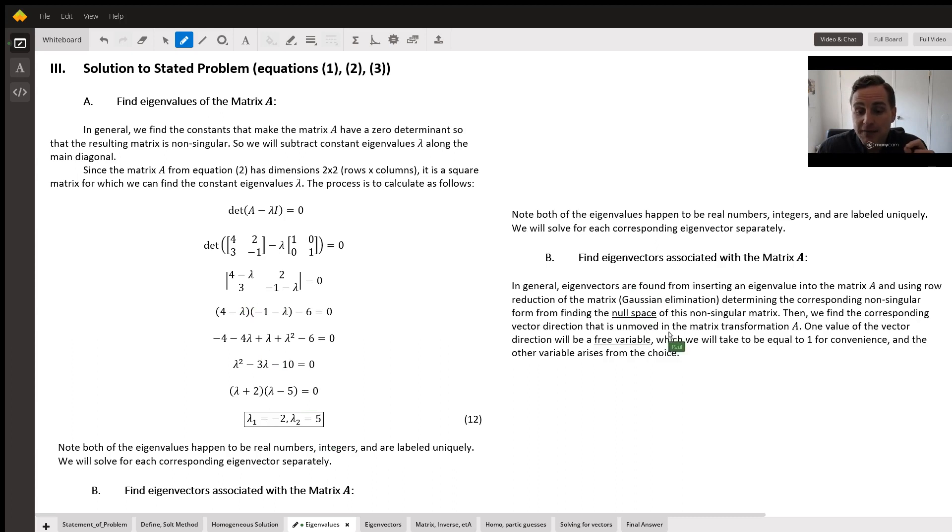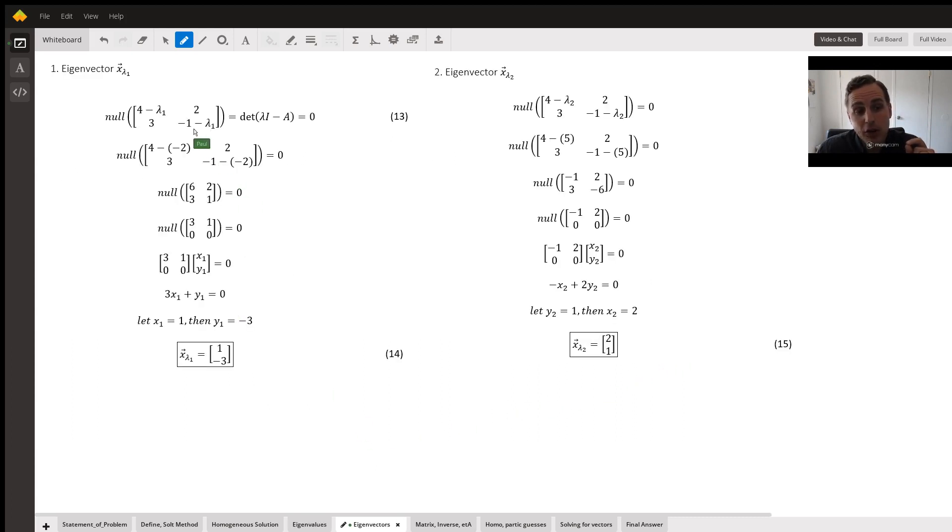To get the eigenvectors associated with those eigenvalues, you insert them back into that determinant, set it equal to 0, and then you solve. Now it turns out you have one equation equal to 0 and then one variable is generally free. We usually choose one of the variables to be 1 and the other one follows from there. So in this case, this is the first eigenvector. This is the second eigenvector when inserting lambda 1 and lambda 2 and then going through the process.